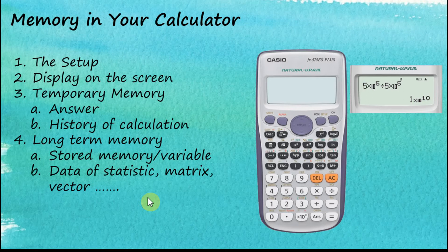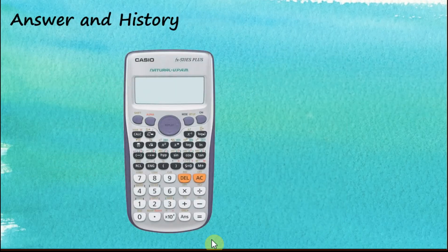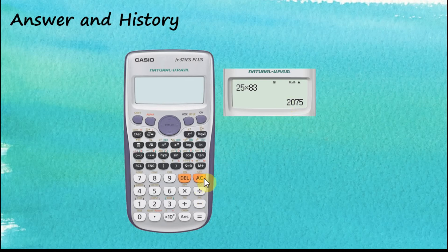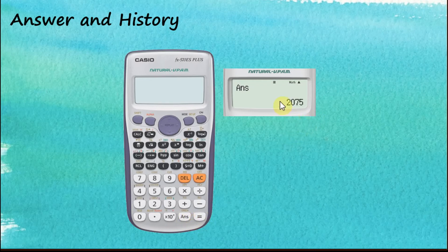Let's say we perform a calculation: 25 multiplied by 83. When we tap on the equal key, the answer will be shown on the screen. At the moment we tap equal, this answer is stored in the calculator as the Answer. We can use the Answer key to retrieve that number — for example, click the Answer key then press equal, and it shows the answer is 2075.